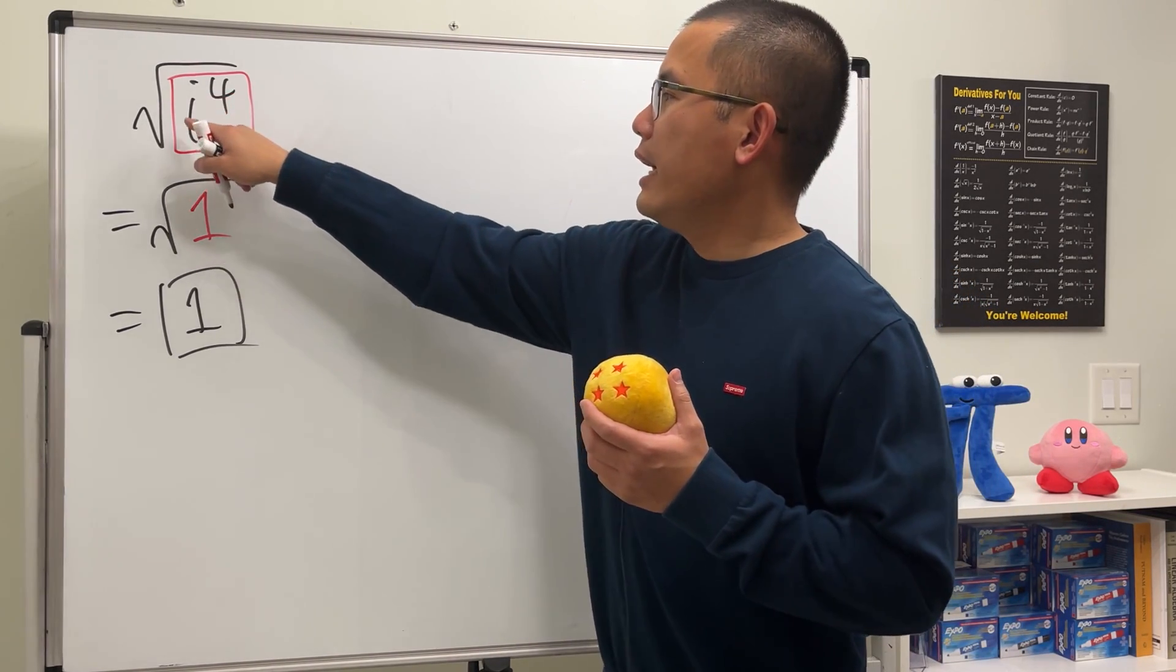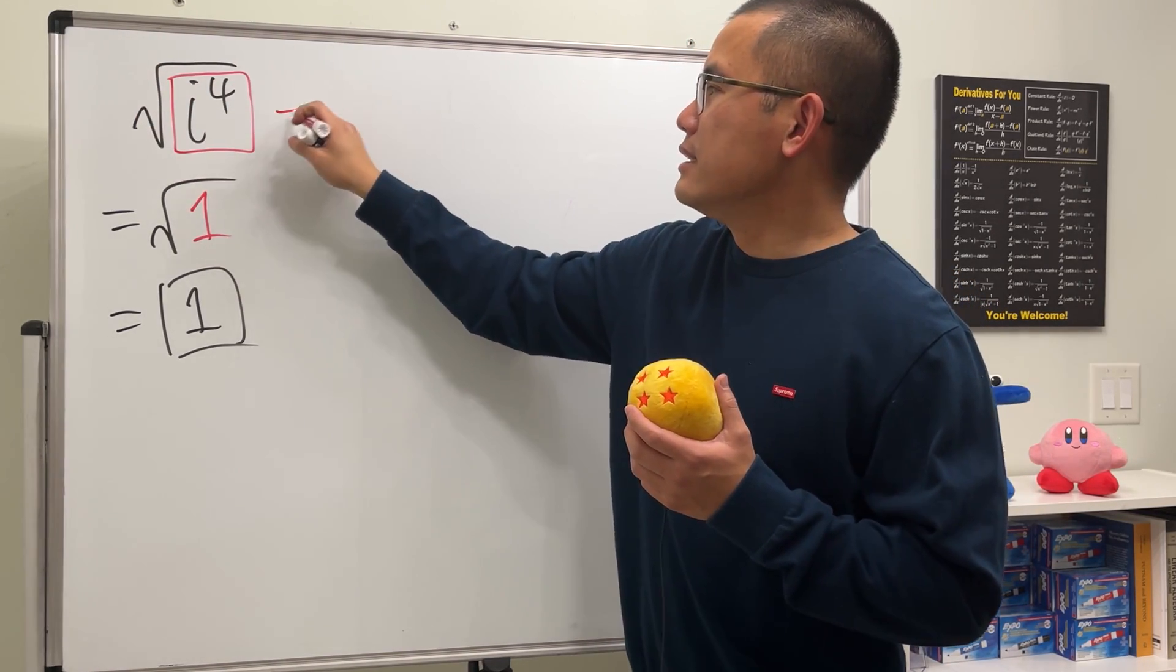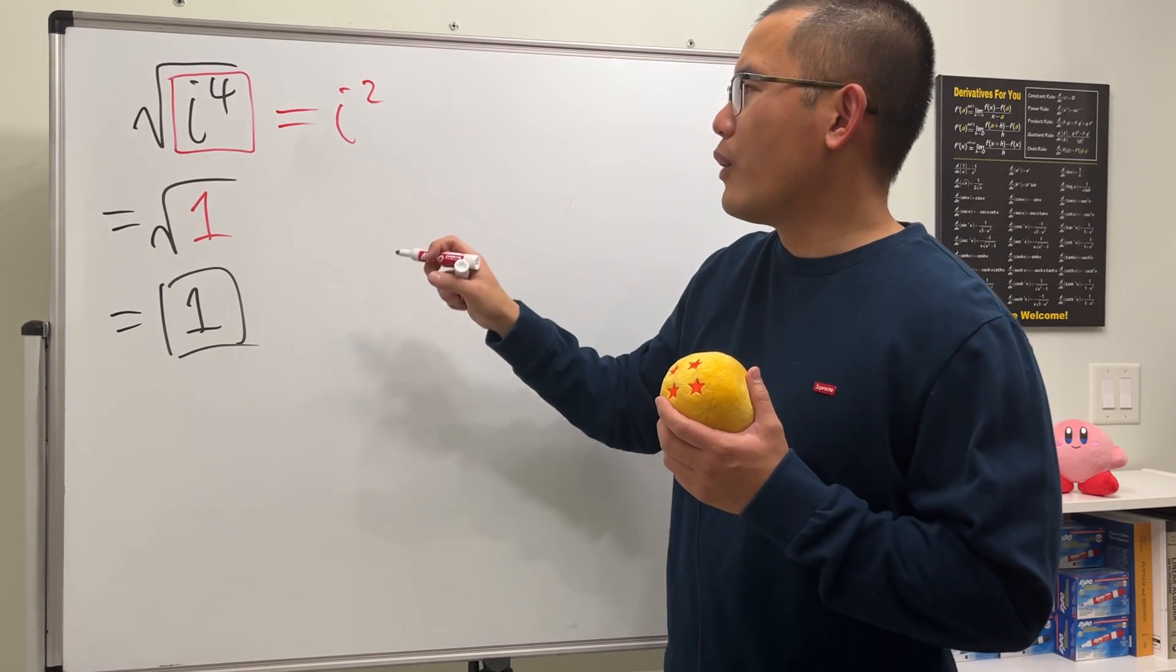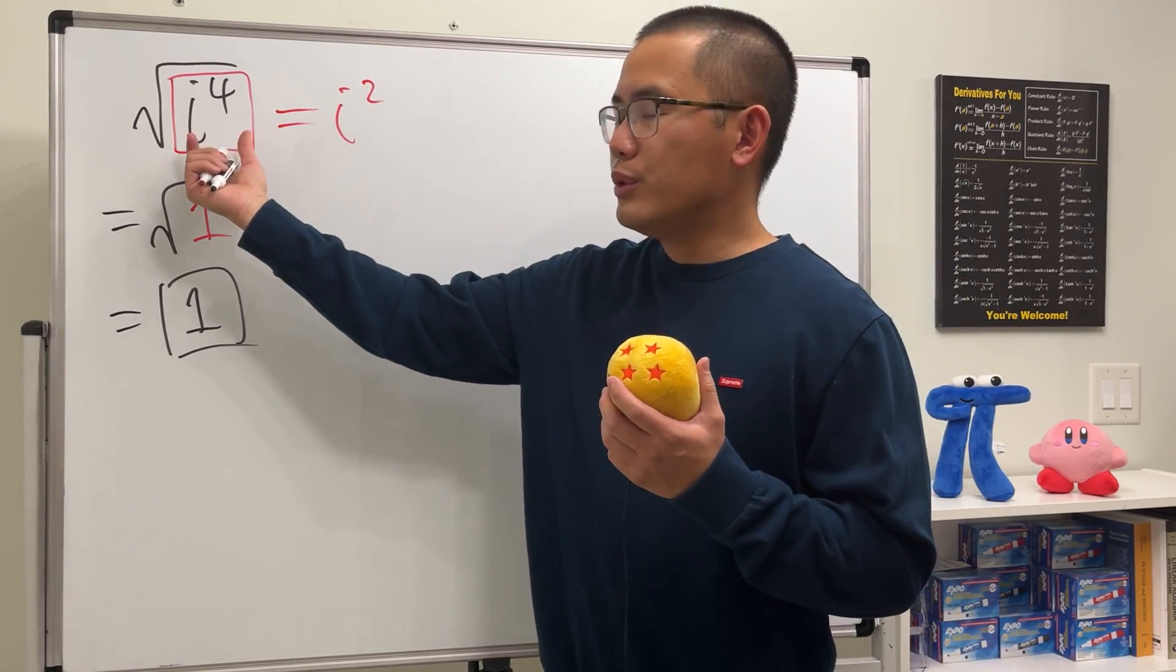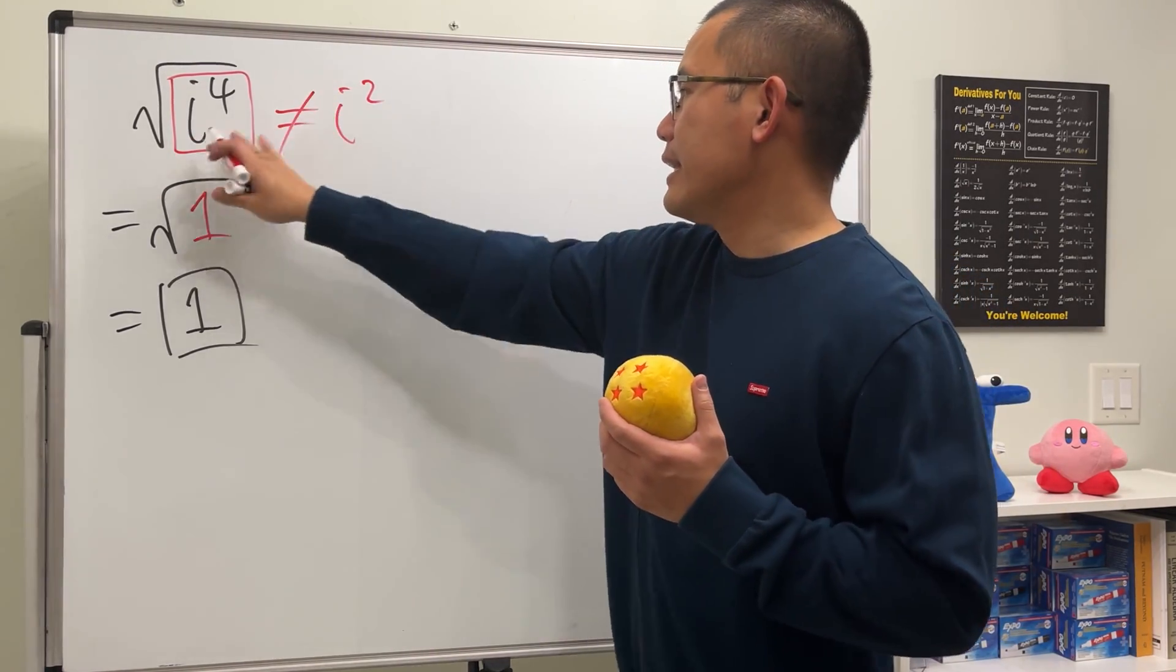And I know some of you guys would like to just say, hey, let's change this to 1 half power and say this right here is equal to i to the second power. But you really have to do this inside out. So this and that are not equal.